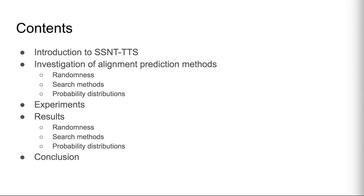In this paper, we investigate the effect of various alignment prediction methods for hard alignment-based TTS called SSNT-TTS. We first introduce SSNT-TTS, then describe the conditions investigated for alignment prediction methods. Next, we show our experiment and its results. Finally, we conclude our findings.